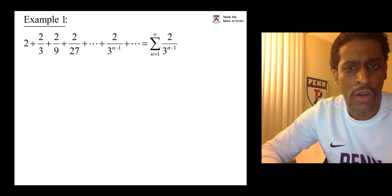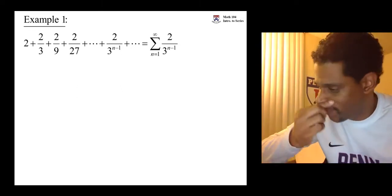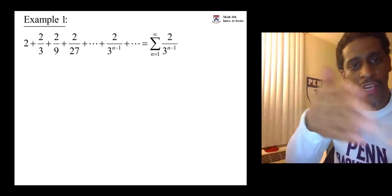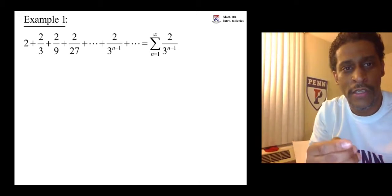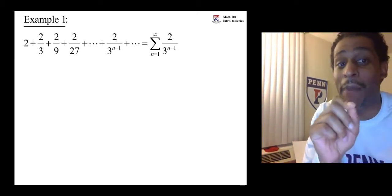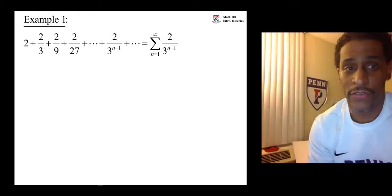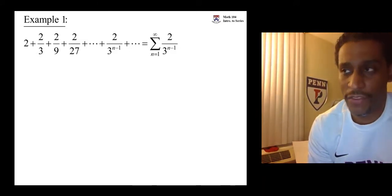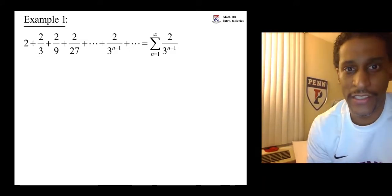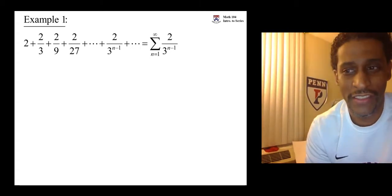Okay, so is it a geometric series? What is a geometric series? It's a series where each term can be arrived at from the previous term by multiplying by a common ratio. What do you multiply 2 by to get 2 thirds? 1 third. What do you multiply 2 thirds by to get 2 ninths? 1 third. What do you multiply 2 ninths by to get 2 over 27? 1 third.